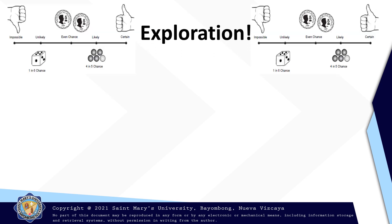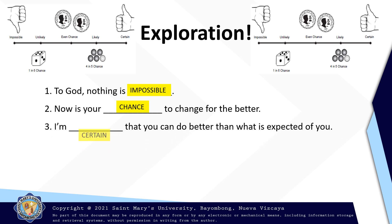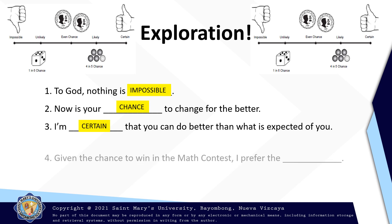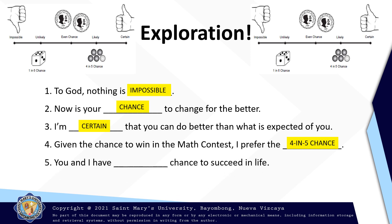After taking the exploration, by just simply choosing the appropriate word to complete the statement. We have number one: to God, nothing is impossible. Number two: now is your chance to change for the better. Number three: I'm certain that you can do better than what is expected of you. Number four: given the chance to win in math contest, I prefer the four in five chance. And lastly: you and I have even chance to succeed in luck.